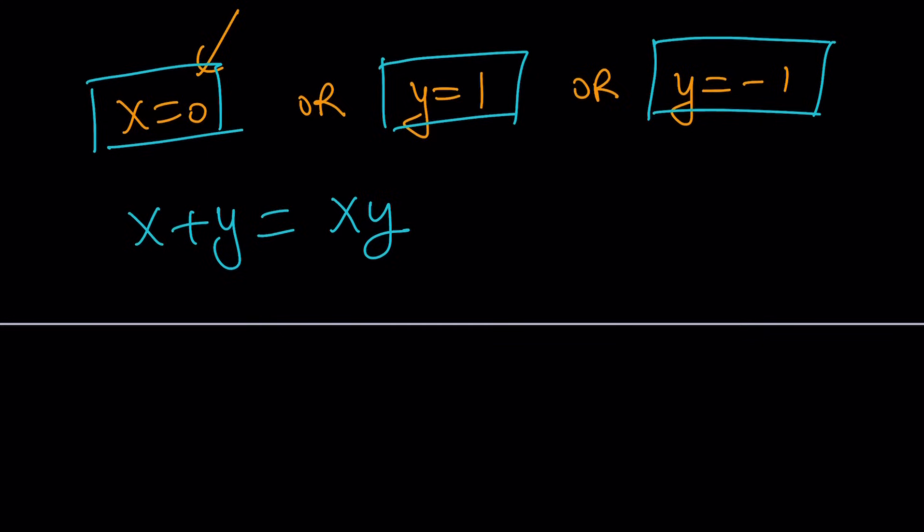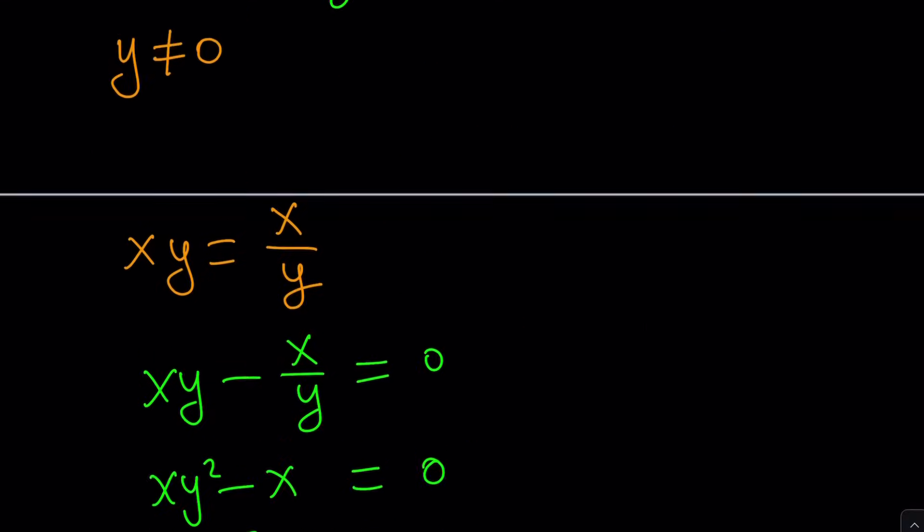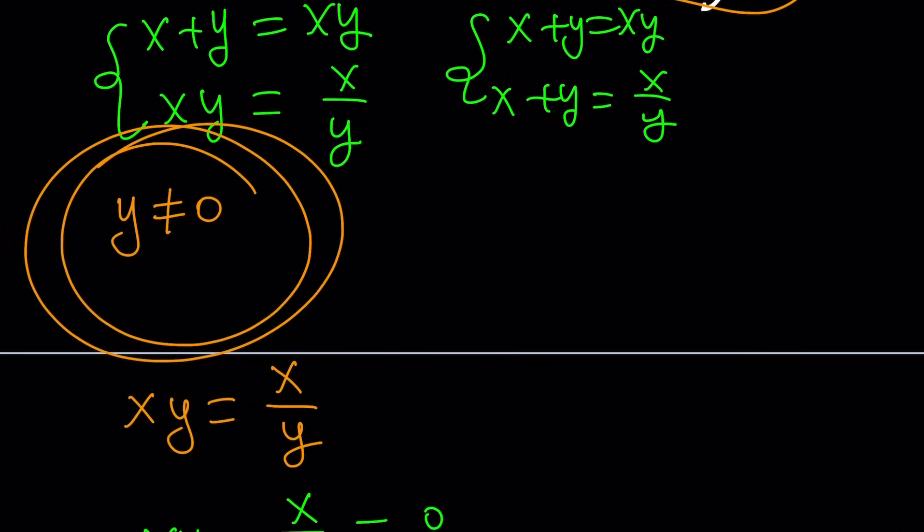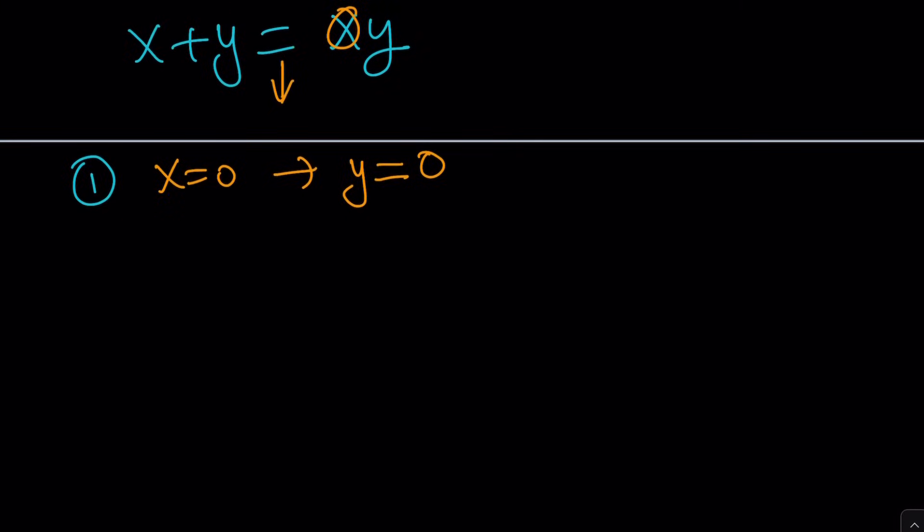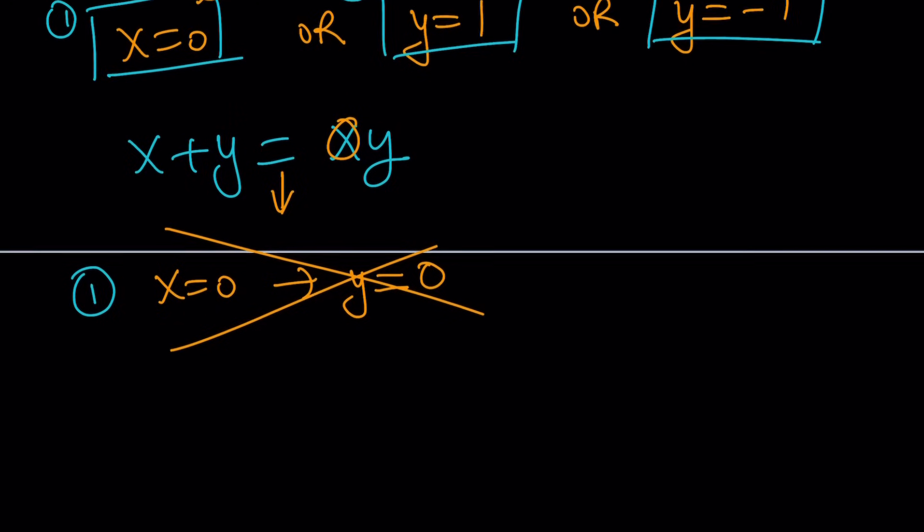Now we're going to look at each case. Case number one, case number two, and case number three. Alright? Let's see where this goes. Cool. Now if x is equal to zero, let's go ahead and take a look at the first case scenario. If x is zero, then from this equation I get y is equal to zero. But that's not good. How did I get that? Well if x is zero, this is going to become zero, right? But that's not good because remember we said y cannot equal zero. So y cannot be zero. So this is not possible. It's not going to happen. First case is done.